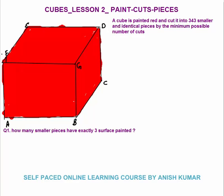I have painted this cube red and named the corners A, B, C, D, E, F, G, and H (which you can't see). When making the cube on paper you only need to draw three surfaces: the front surface, the right surface, and the top surface. The question says we need to cut this cube into 343 smaller but identical pieces with the minimum possible number of cuts.